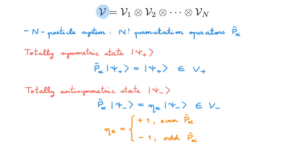So why do we care about these totally symmetric and totally antisymmetric states? In the video on the symmetrization postulate, I explain how identical particles in quantum mechanics can only be in either totally symmetric or totally antisymmetric states. So these states are fundamental in studying quantum systems of more than one particle, and what I want to do in the rest of the video is figure out how to build them.